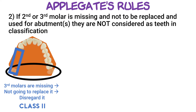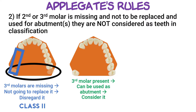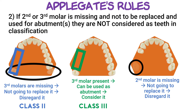On the other hand, if our third molars are present and stable enough to be used as abutments, we will consider them as part of our Kennedy classification and treat them as teeth. In this case, we have an edentulous area with teeth both in the front and the back that can be used for support, and thus this will be a Class 3 classification. If our second molar is missing and we have no plan to replace it, we'll ignore it and treat it as a missing tooth, making this once again a Class 2 classification.